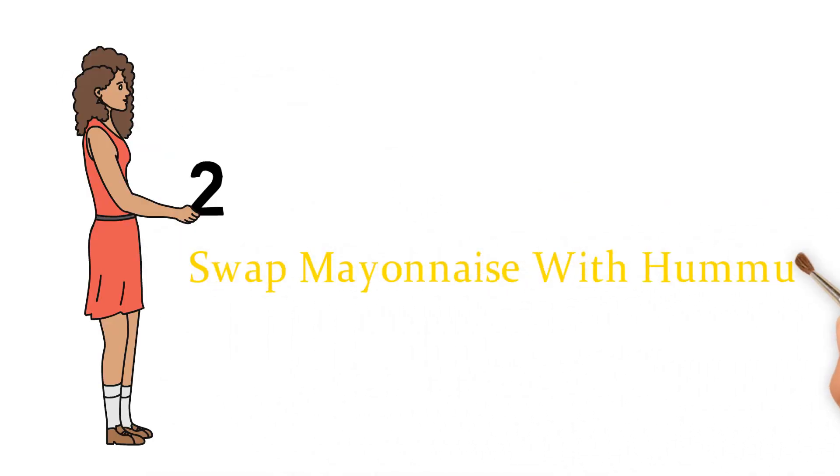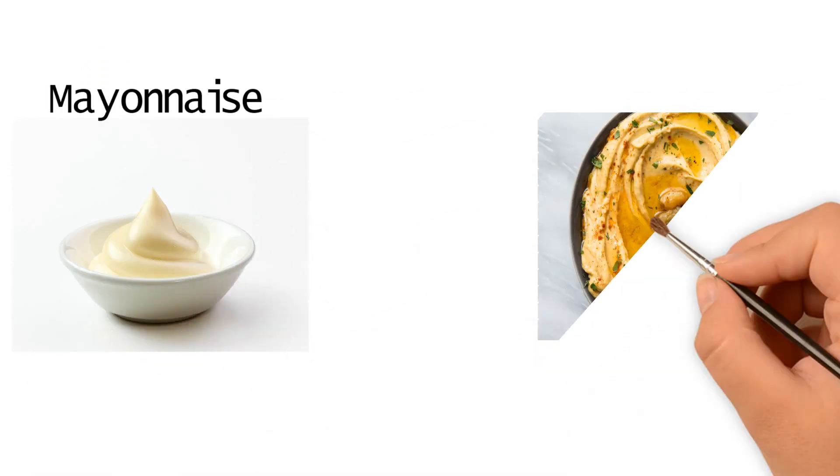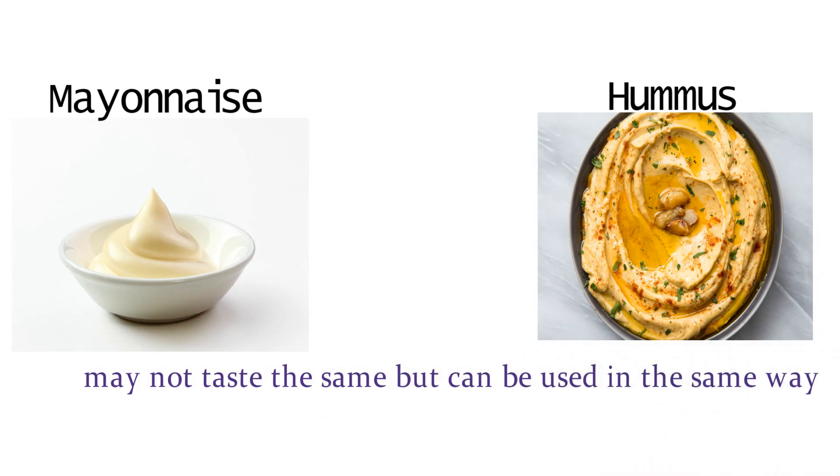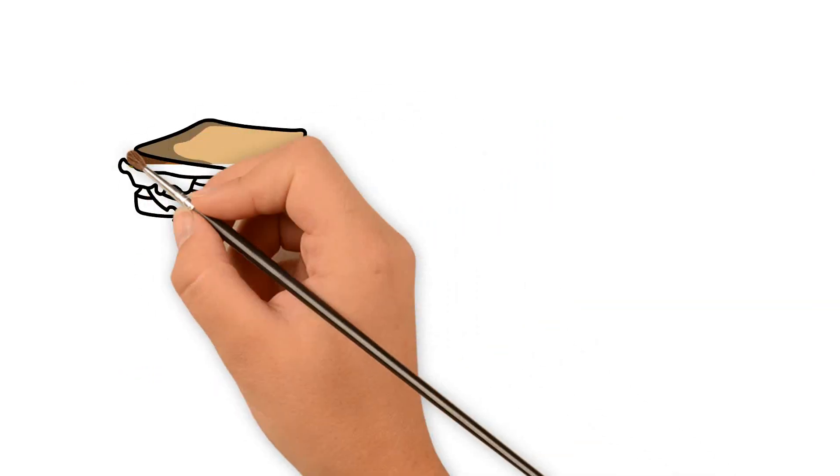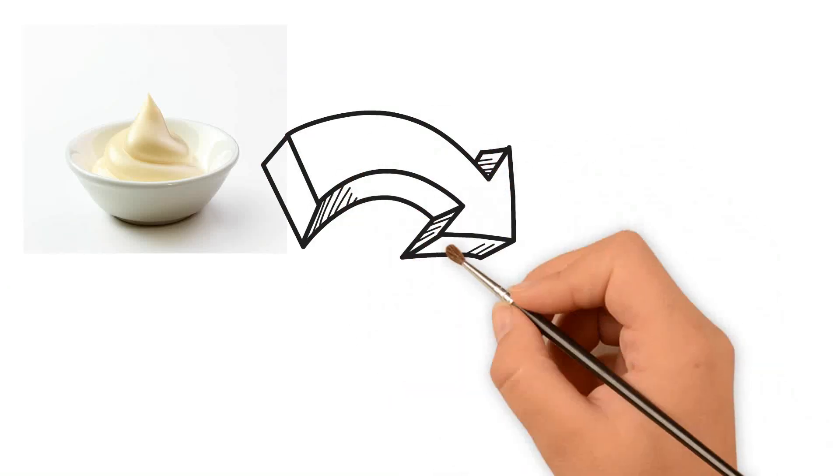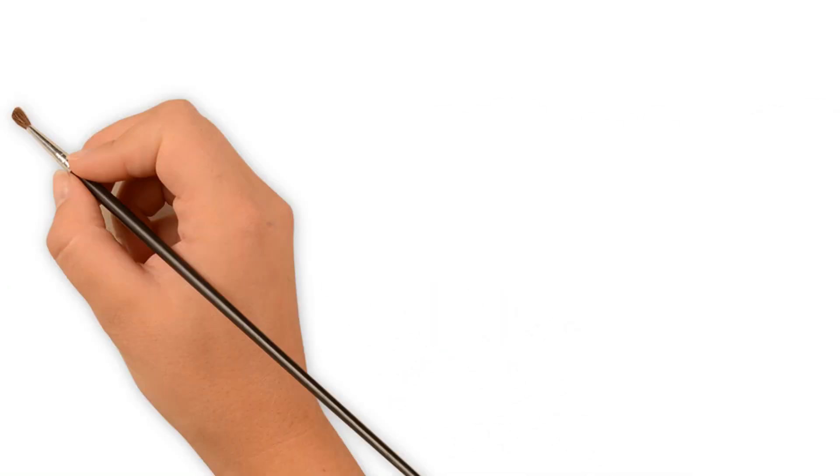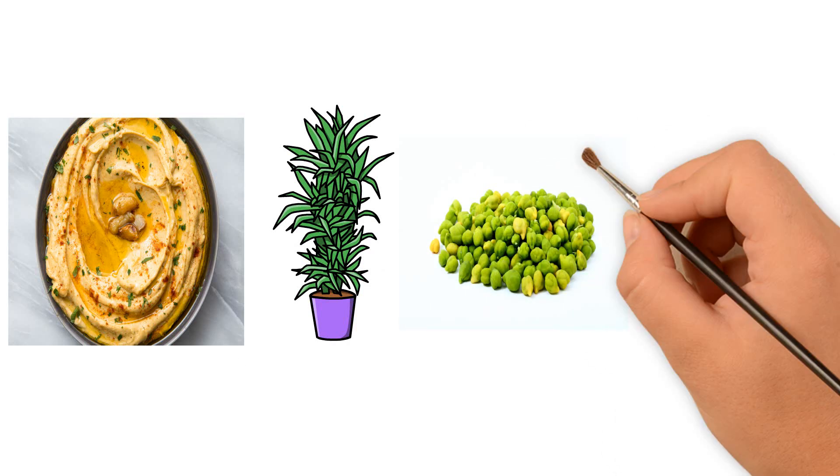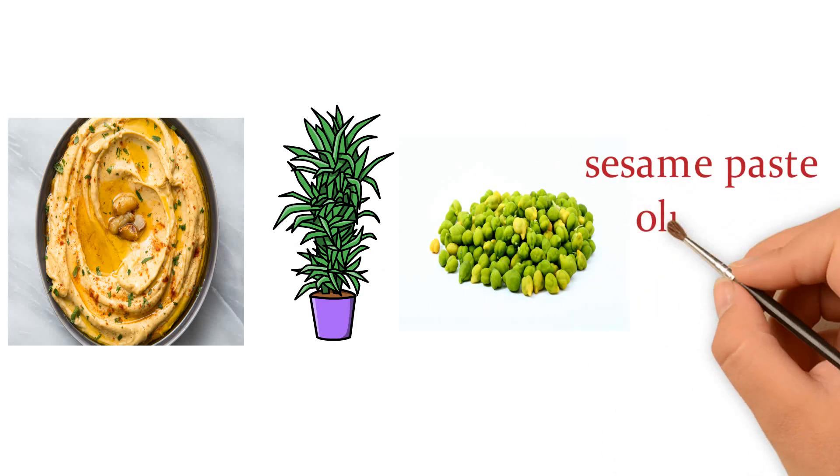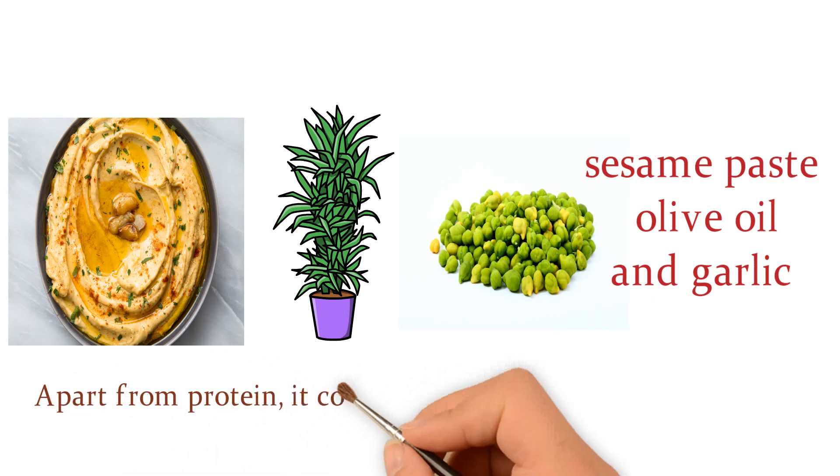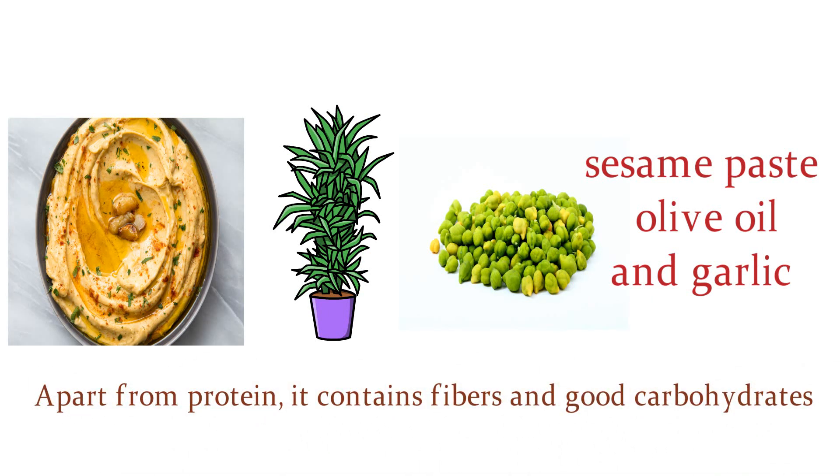2. Swap Mayonnaise with Hummus. Mayonnaise and hummus may not taste the same, but can be used in the same way, in sandwiches, pasta, and pizza. Whereas mayonnaise is mostly fat and has very high calorie content, hummus is rich in plant protein like chickpeas, sesame paste, olive oil, and garlic. Apart from protein, it contains fibers and good carbohydrates.